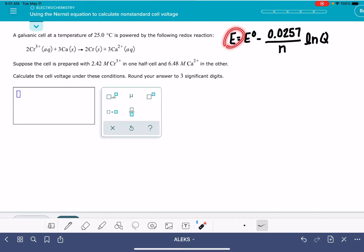To solve this problem, we're being asked to calculate the non-standard voltage. To do that, we need to know the standard cell voltage, we need to know N, which is the number of electrons that are being exchanged in the redox reaction, and we also need to know Q, the reaction quotient.